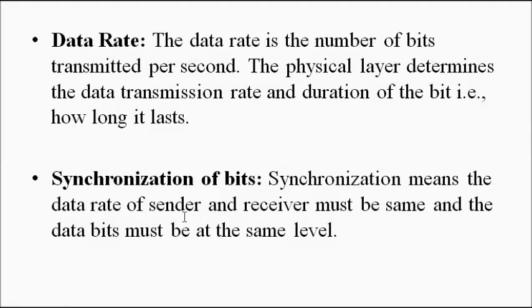The data transmission rate, the duration of each bit, and the bit length are all decided by the physical layer. Fourth is synchronization — the rate at which data is being sent by the transmitter should match the rate at which the receiver can receive it, to avoid data loss, distortion, or errors. The transmission rate of the sender and the reception rate of the receiver must be approximately the same; otherwise there will be corrupted data frames. Handling this is the job of the physical layer.